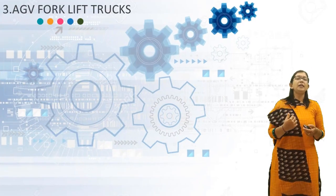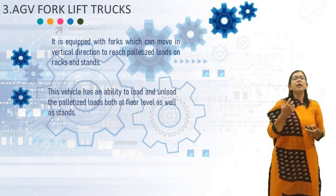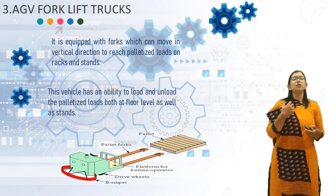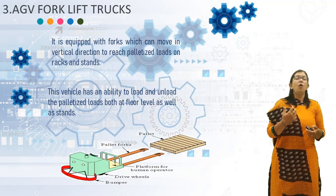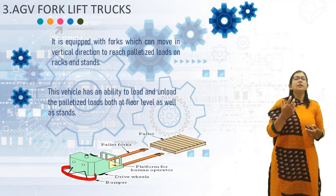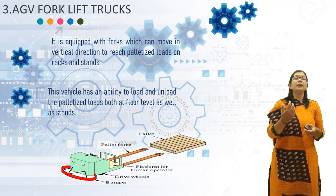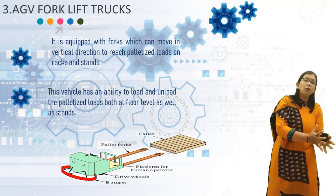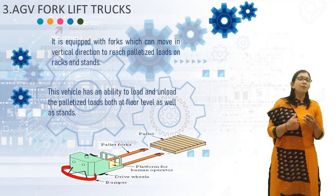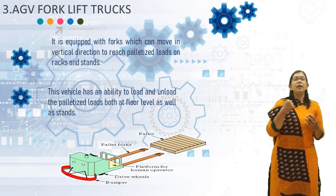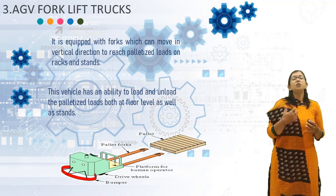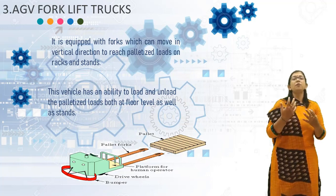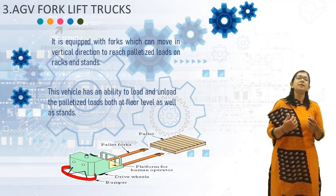The third type is AGV Forklift. It is equipped with a fork that can move in the vertical direction to reach the palletized load on racks and stands. This vehicle has the ability to load and unload palletized loads both at floor level and on stands. As shown in the diagram, the AGV Forklift truck can position its fork at any height so that conveyors or load stands of varying height can be accessed easily.